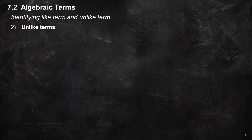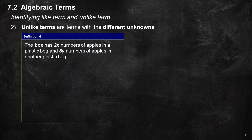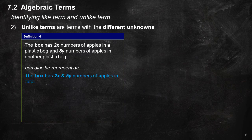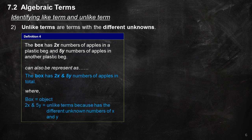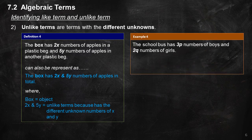Unlike terms are terms with different unknowns. Definition 4: The box has 2X numbers of apples in one plastic bag and 5Y numbers of apples in another plastic bag, represented as 2X and 5Y numbers of apples in total. Here, 2X and 5Y are unlike terms because they have different unknowns X and Y. Example 4: The school bus has 3P numbers of boys and 2Q numbers of girls. Total number of students equals 3P plus 2Q.